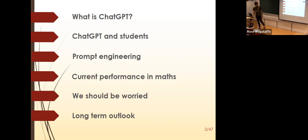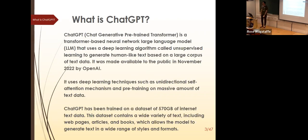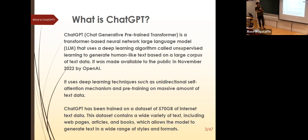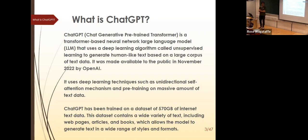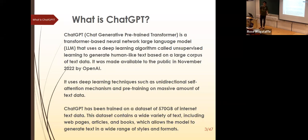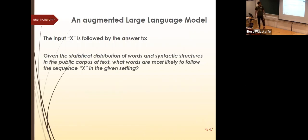What is ChatGPT? It's a transformer-based neural network large language model — I'll be saying LLM a lot. It generates human-like text based on a large corpus of text data. It came out in November 2022, uses deep learning, and has been pre-trained on 570 gigabytes of internet text data. It's scraped from the internet and made available to AI researchers.